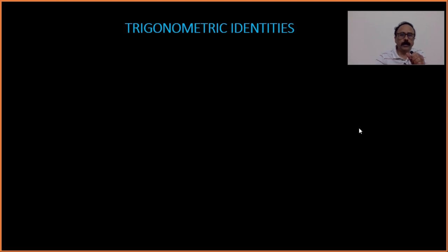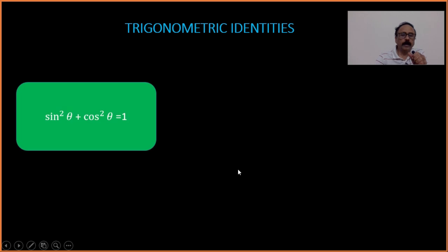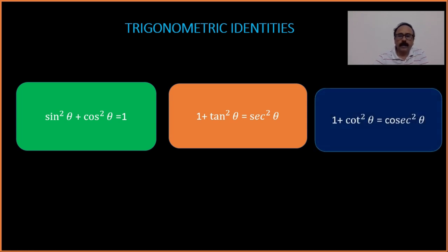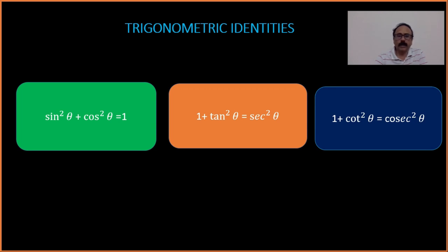Today, in this video, let's talk about the trigonometric identities. There are three trigonometric identities. One is sin²θ + cos²θ = 1. The second is 1 + tan²θ = sec²θ. And finally, 1 + cot²θ = cosec²θ.